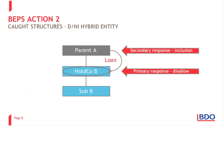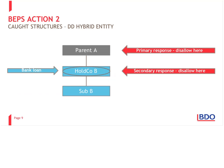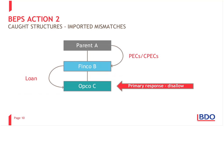On this slide you can see an example of a structure. We have a hybrid entity in country B which is disregarded by country A. The primary rule would be that in B there is no deduction of the interest expense. On another example slide, again a hybrid entity in country B disregarded by country A — the primary rule would be that in B there is no deduction. And if B has not implemented the primary rule, then A should not allow the deduction. In a slightly more complex example, we have a hybrid loan going from parent A to Finco B, and an ordinary loan going from Finco B to Opco C. The solution here would be that there is no deduction of the interest expense in Opco C.